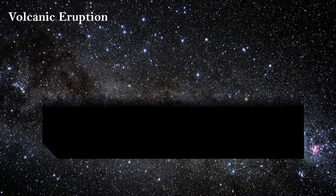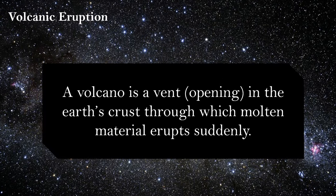Volcanic eruption: A volcano is a vent or opening in the Earth's crust through which molten material erupts suddenly. Simply, a volcano is a vent — an opening on the Earth's crust — and through this opening, molten material like molten magma and gases erupt.